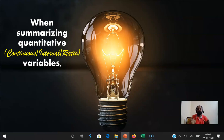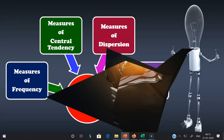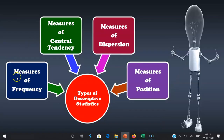Descriptive statistics allows us to characterize our data based on its properties. Generally, there are four major types of descriptive statistics. The first one is measures of frequency. It consists of count, percent, and frequency. It shows how often something occurs, and it is used when we want to show how often a response is given.